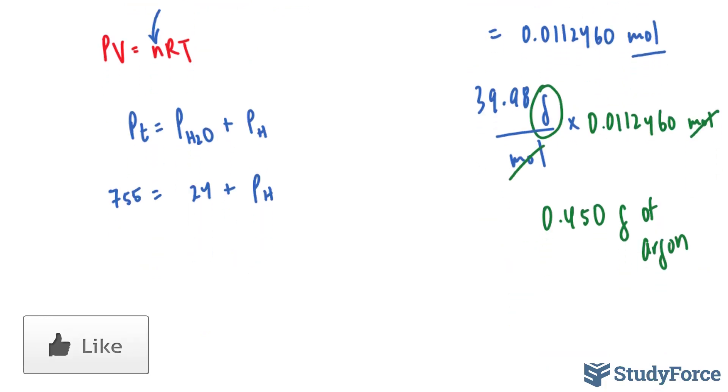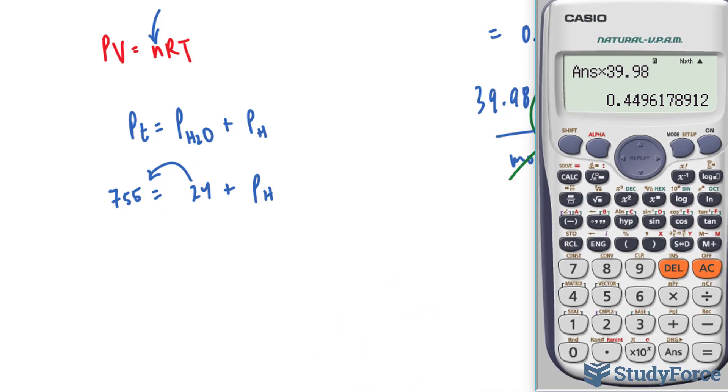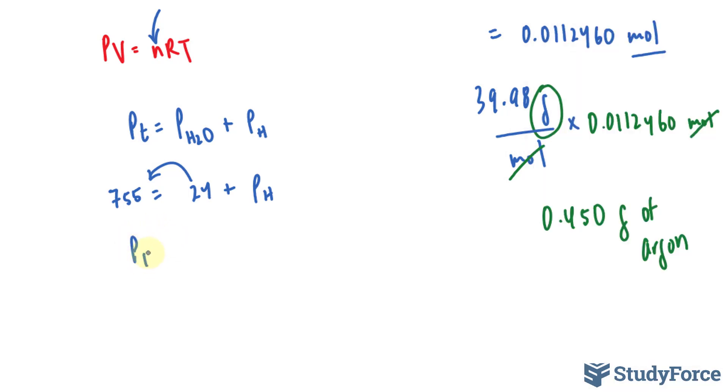This is a simple algebraic equation. We bring this number over to the other side, and we have 755 minus 24. By bringing it to the other side, it becomes negative. Using my calculator, 755 minus 24 is equal to 731. So P sub H is 731 torr.